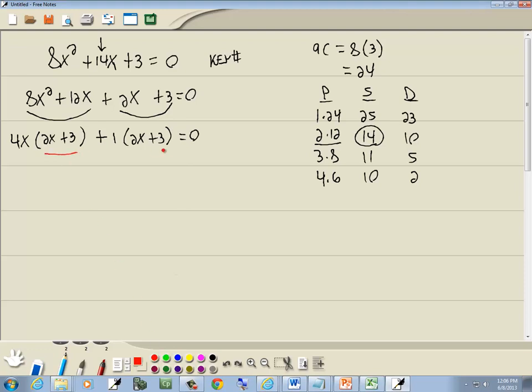Now, remember our goal was to get this parentheses the same as that parentheses, which it is. So I'll factor that out in front. And to decide what goes in your second set of parentheses, you can cover up these 2x plus 3s, and that leaves us 4x plus 1.